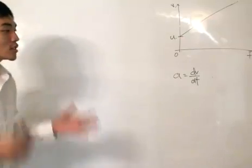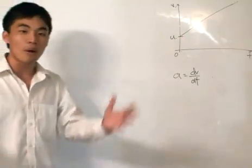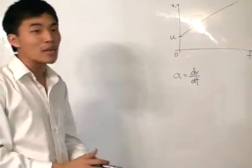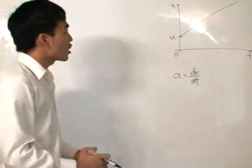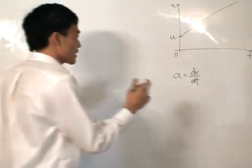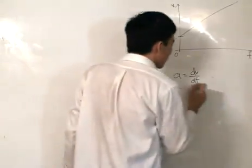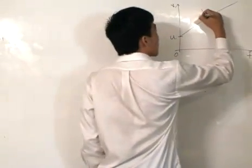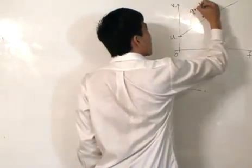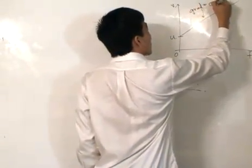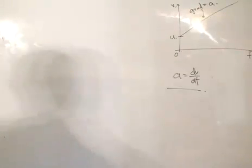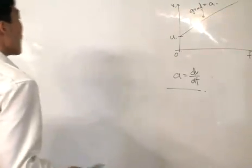We will use these equations to solve problems — a particle moving in a straight line with constant acceleration. As you can see, the gradient here is equal to the constant acceleration.